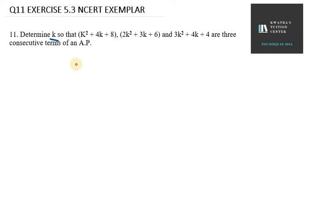Now, what is given? We are given three terms, and these terms are not exact numbers. We are given expressions. You have to make use of all the details that are in the question. These three terms are consecutive terms of an AP, an arithmetic progression.